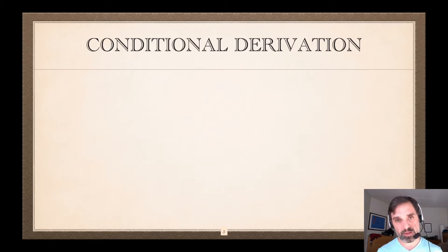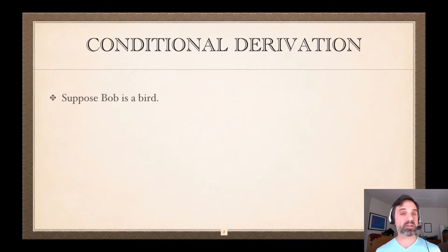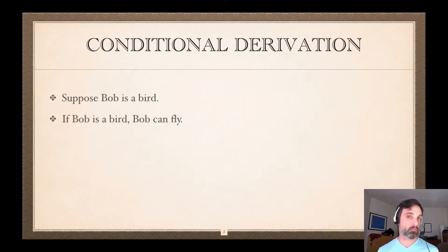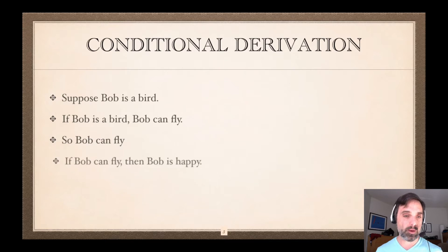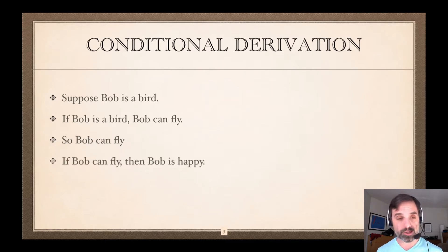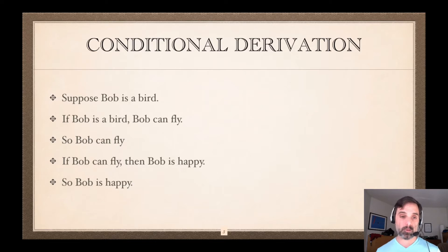So how might we establish this argument? We would say: suppose Bob is a bird. Then we have the premise — if Bob is a bird then Bob can fly — so by modus ponens we can conclude that Bob can fly. And now we have our second premise, if Bob can fly then Bob is happy, and so we can again with modus ponens conclude that Bob is therefore happy.